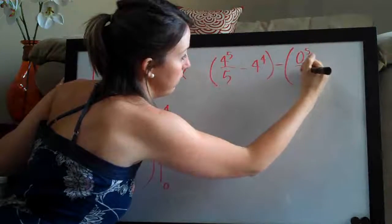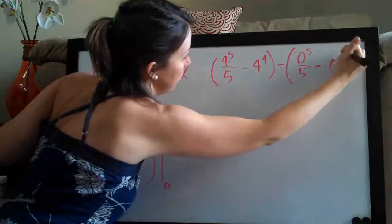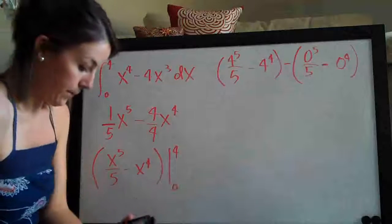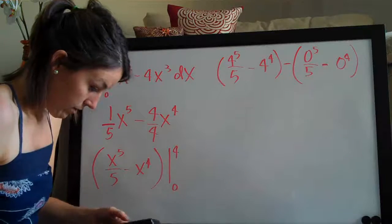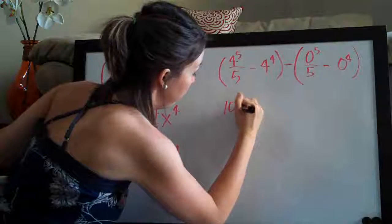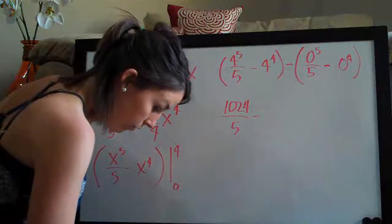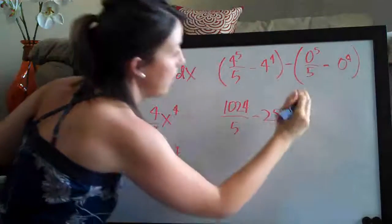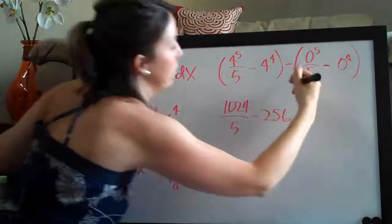So we have zero to the fifth over five minus zero to the four. So that's how we evaluate. And now all we need to do is go ahead and use a calculator to simplify this. So four to the five is 1024. So 1024 over five minus four to the four which is 256. And then this is going to be zero and this is going to be zero as well. So this whole thing cancels.